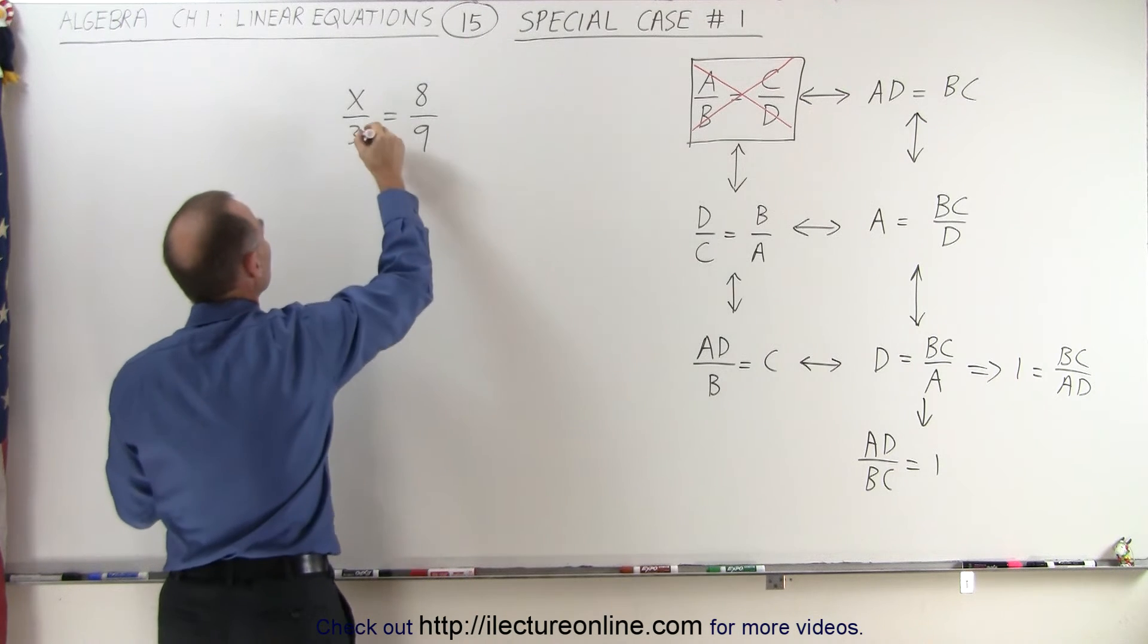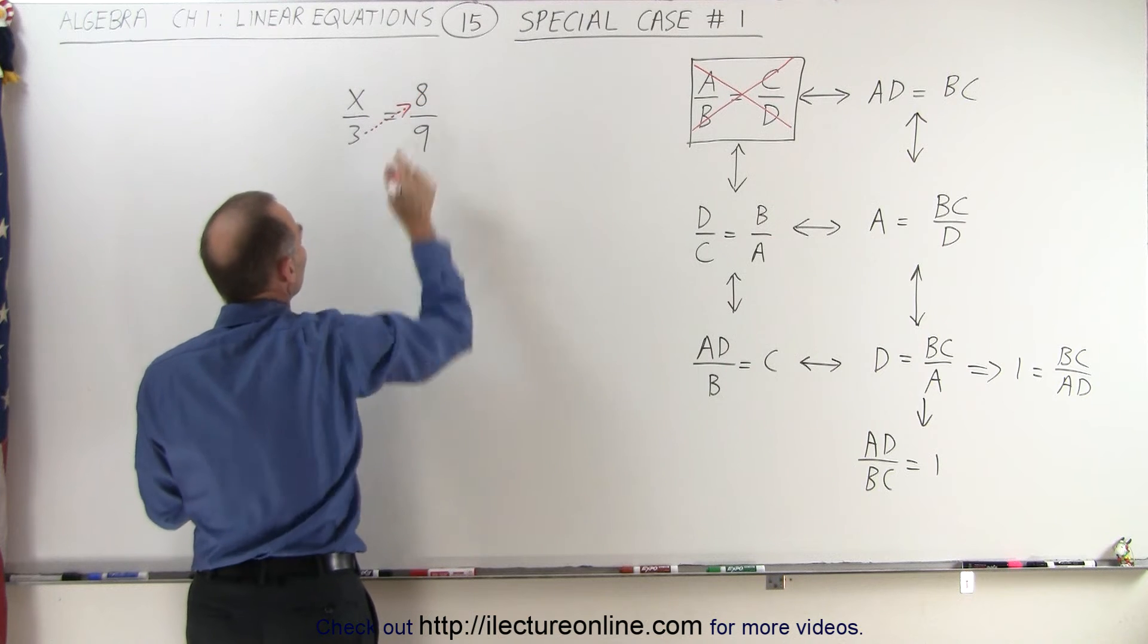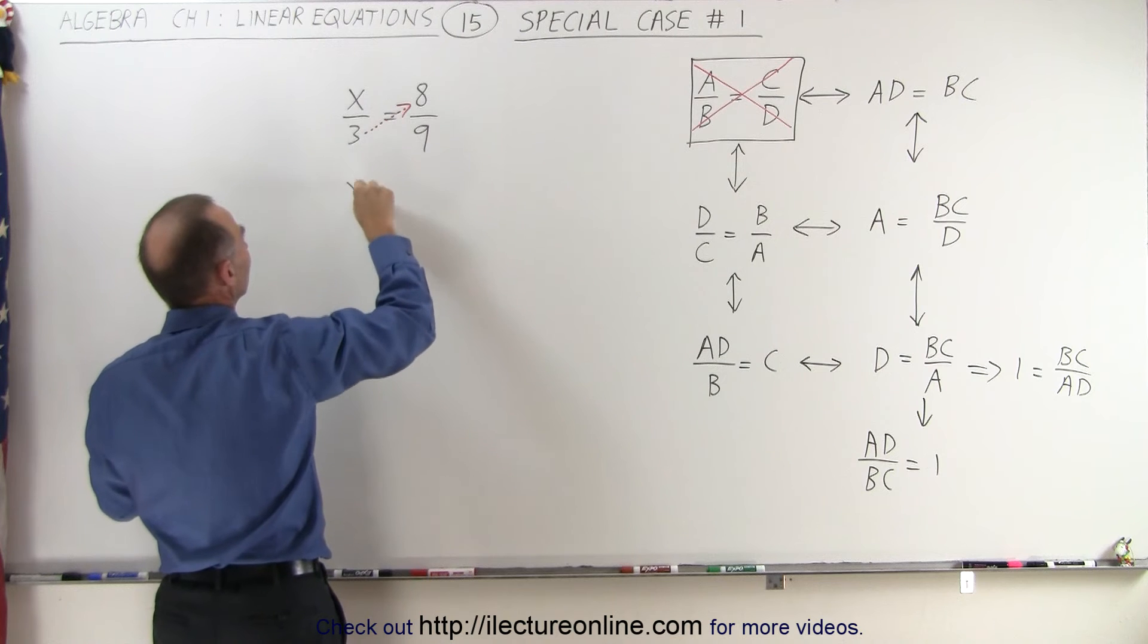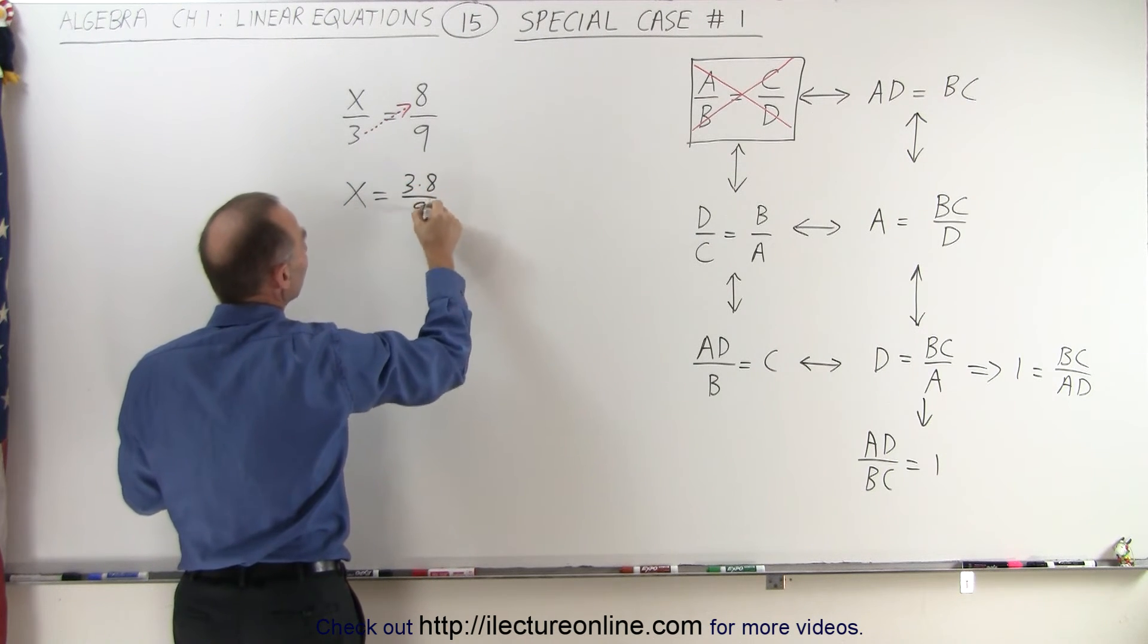I simply am going to take the 3 and move it across to over here, when I multiply that times the 8. So, in other words, this becomes X is equal to 3 times 8 divided by 9.